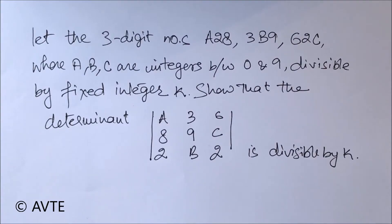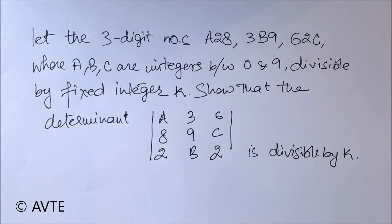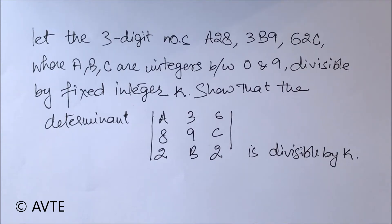Let the three-digit numbers a28, 3b0 (i.e., 300+b×10), b9, and 602c — where a, b, c are integers between 0 and 9 — all be divisible by a fixed integer k. We need to show that the given determinant with rows a36, 89c, and 2b2 is also divisible by k.